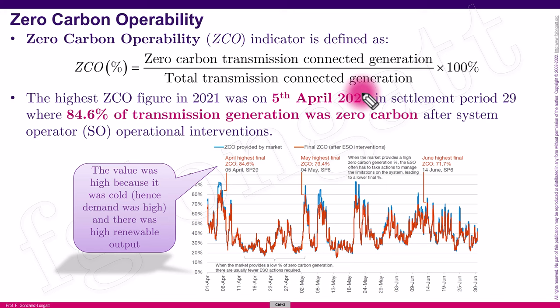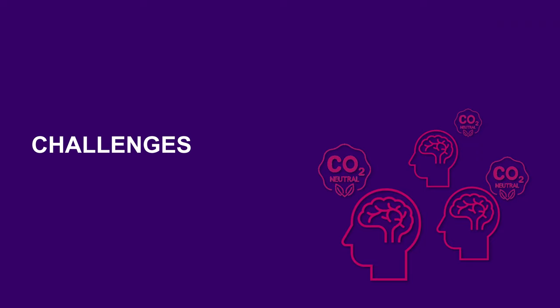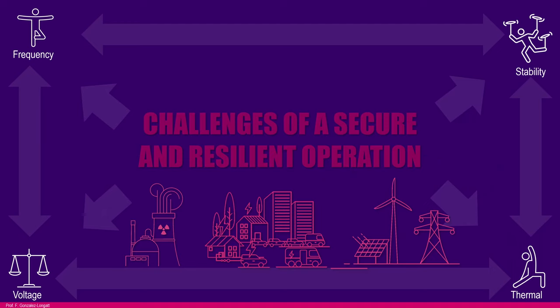We can say that the GB system, together with Australia and some subsystems inside the United States, are most aggressively moving toward the net zero path. However, reaching net zero creates several challenges. The key question is: what are the main challenges related to the secure and resilient operation of a net zero system? There are challenges from the distribution system operator and from the integration of distributed energy resources and interconnections.